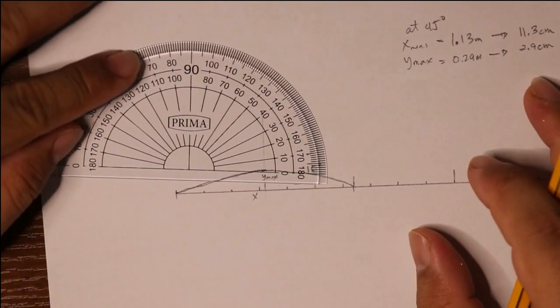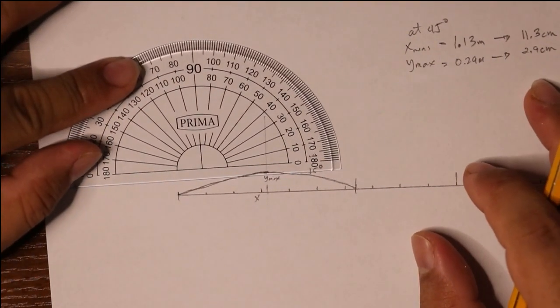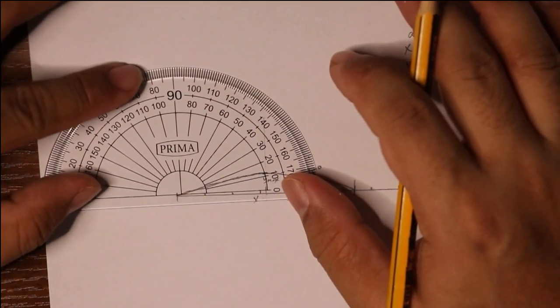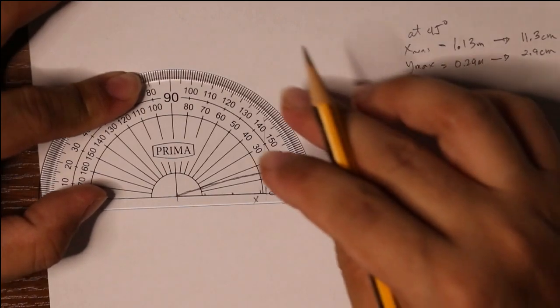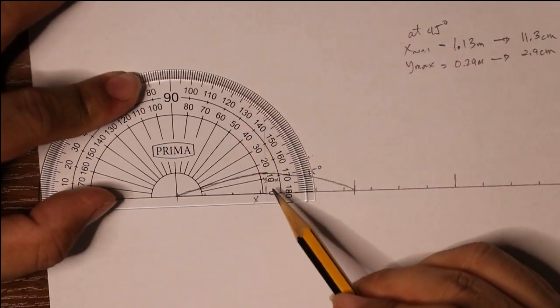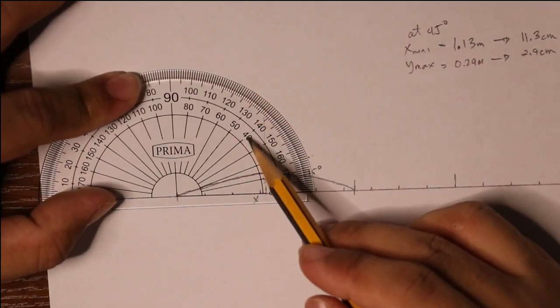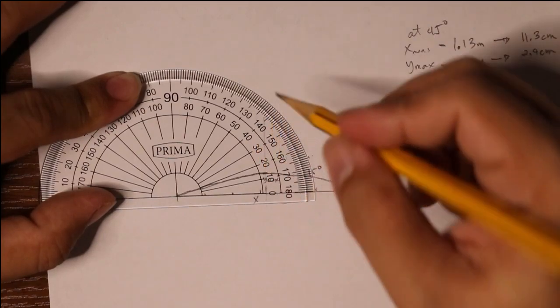Get your degree scale and place it at zero. From there measure your 45 degrees. So 0, 10, 20, 30, 45 degrees is right over here.